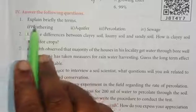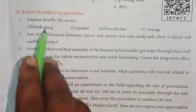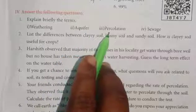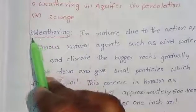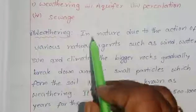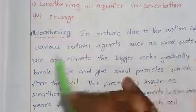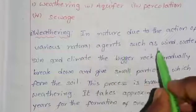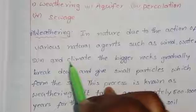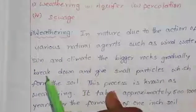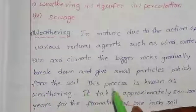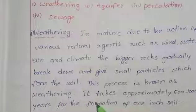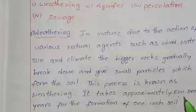Answer the following questions briefly. 1) Weathering: In nature, due to the action of various natural agents such as wind, water, sun, and climate, the bigger rocks gradually break down and give small particles which form the soil. This process is known as weathering. It takes approximately 500 to 1000 years for the formation of 1 inch of soil.